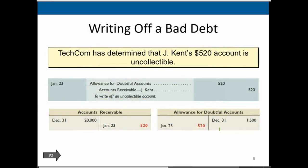Now, writing off bad debt: Techcom has determined that a $520 account is uncollectible. If we set up the allowance in December and then in January someone is determined to be uncollectible, under the allowance method we already recorded the expense back in December — it's already in the allowance account. So we take it out of the receivable, post it to the subsidiary ledger for that person, and instead of debiting the expense and lowering net income now, we debit the allowance account — the contra asset — so there's no effect on net income. We reduce the allowance here.